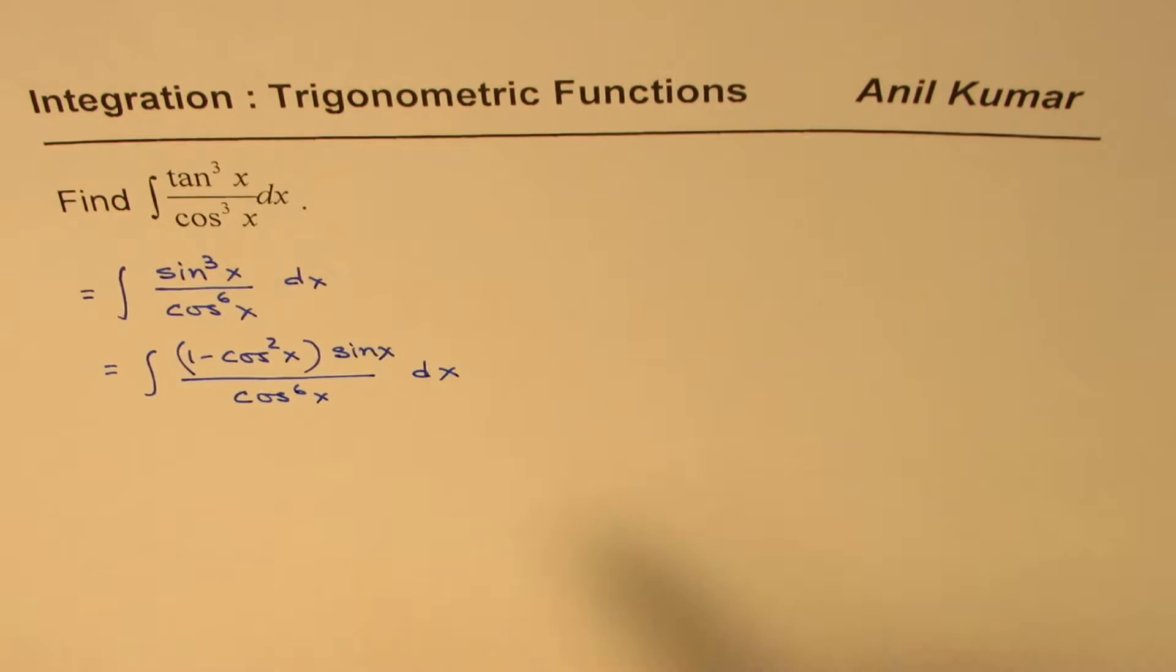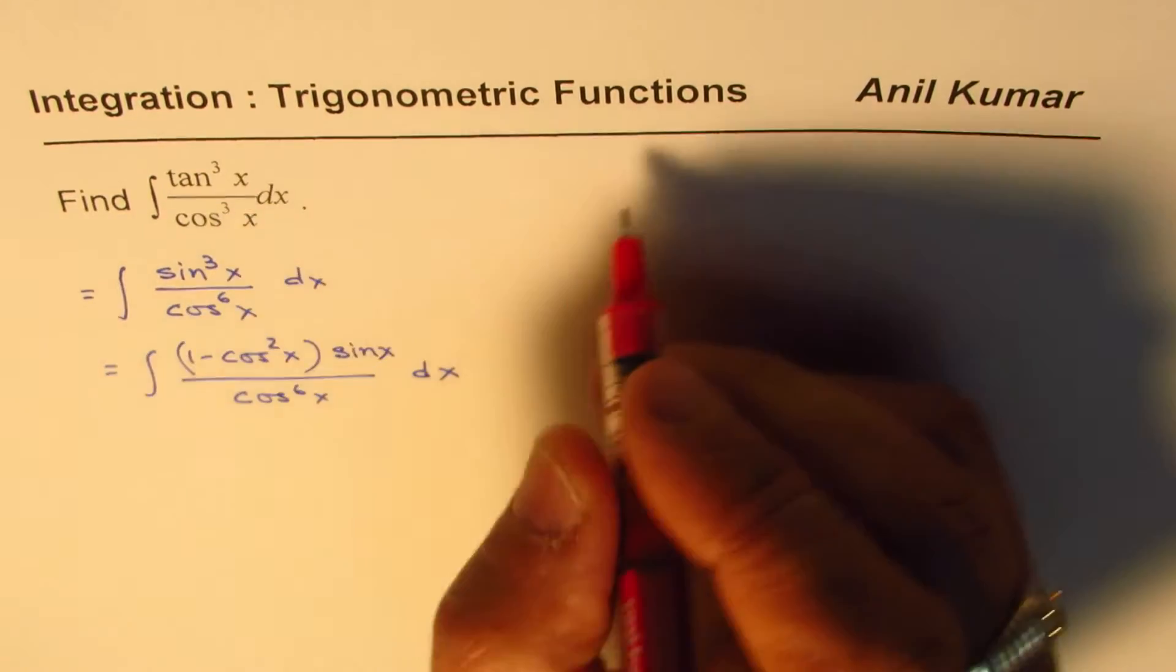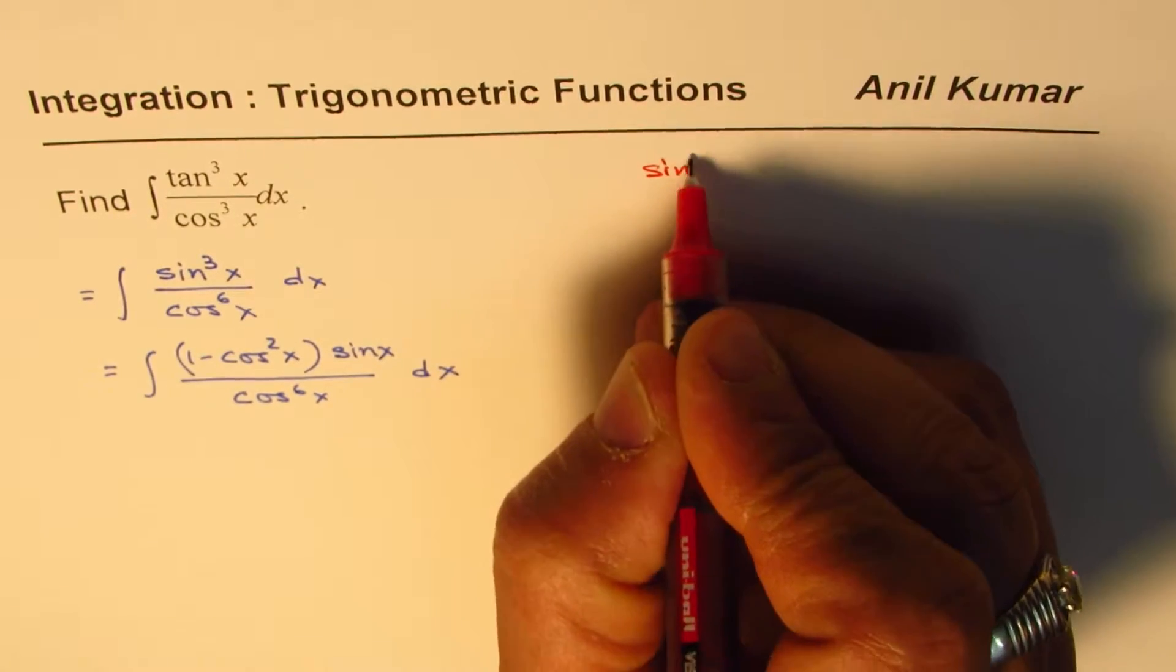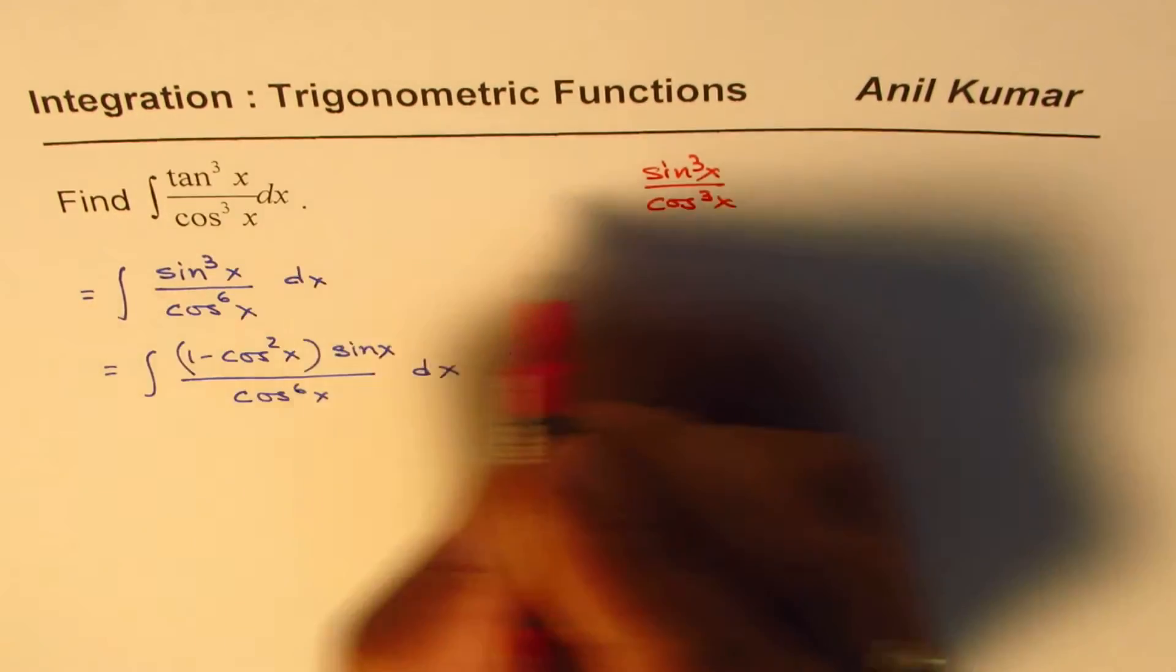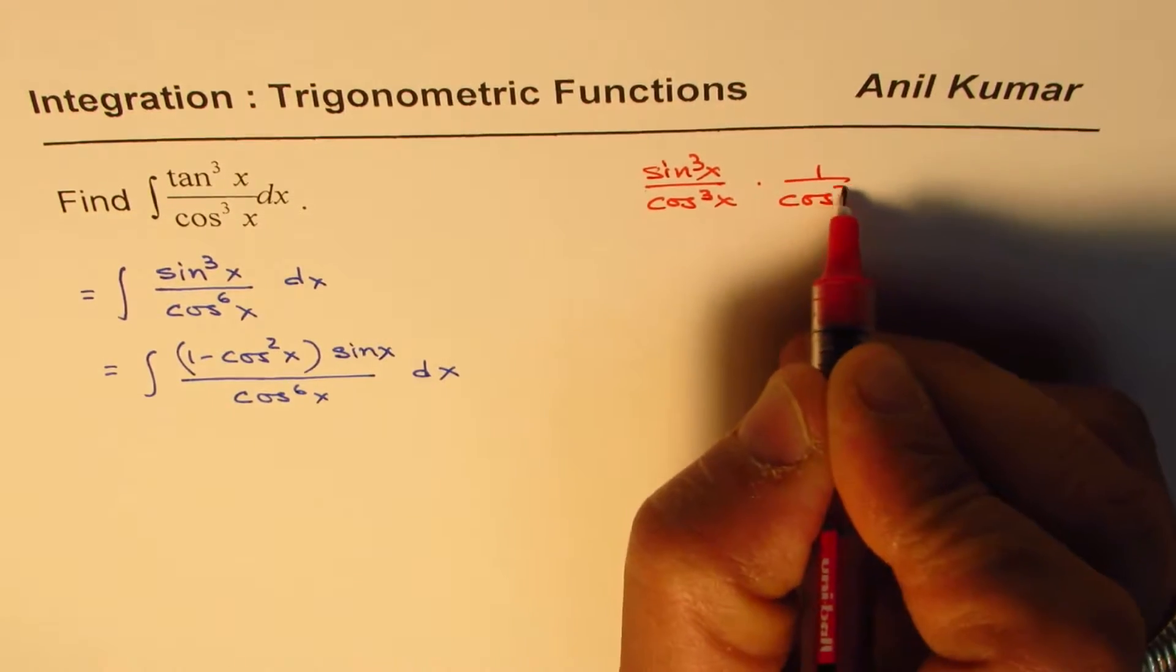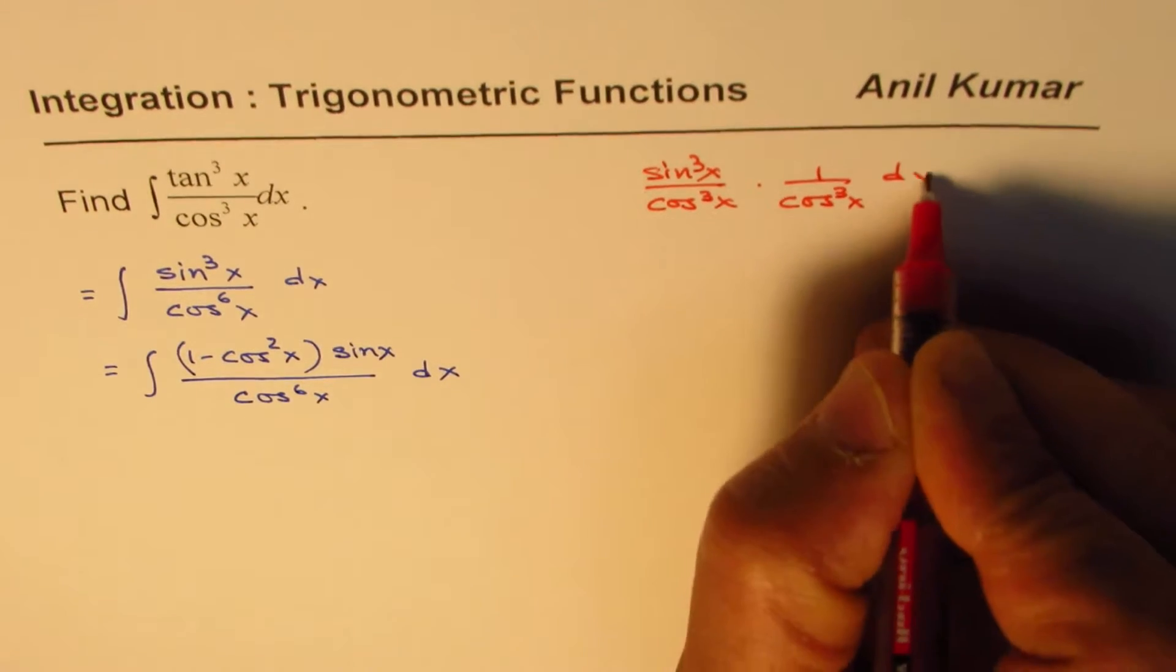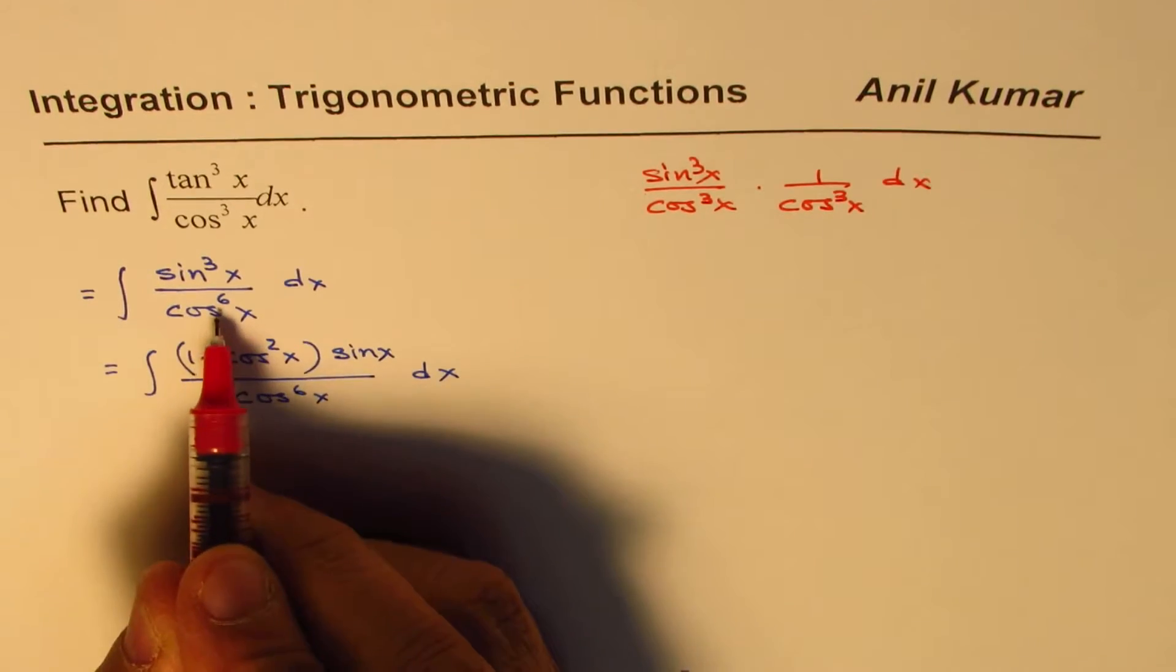So in the first step, let me show you what I did. We wrote tan as sine cube x over cos cube x, and there was already 1 over cos cube x, dx. So that made cos to the power of 6x.